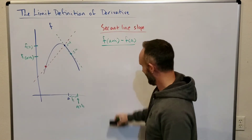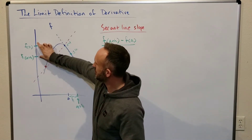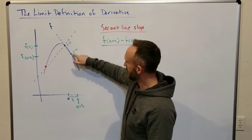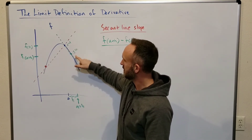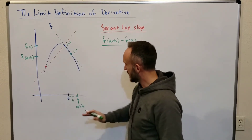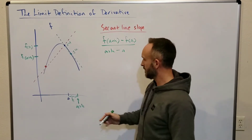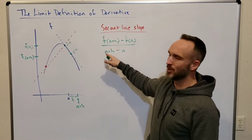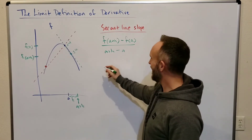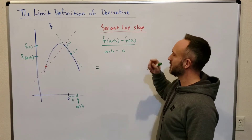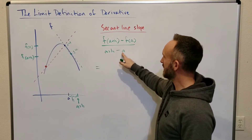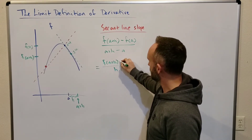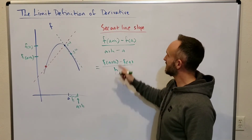Now I need the run of the line, so I subtract the x values in the same order: a plus h minus a. This simplifies to just h. So the secant line slope formula is f of a plus h minus f of a, all over h. It's standard to use the a plus h point first in this format, and the denominator simplifies nicely to h.